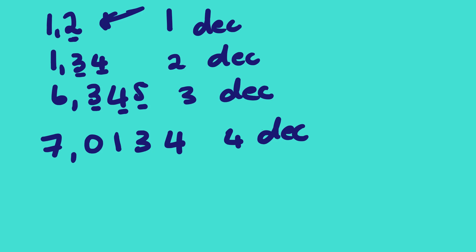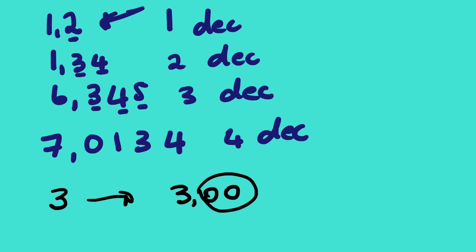Normally you are given instructions on how many decimal places you should round off your answer. Suppose that after calculating you get the answer three, and you're instructed to round off to two decimal places. You should write it like this: 3.00. We really need those two numbers after the decimal point, even though they are zeros — and then it is rounded off to two decimal places.